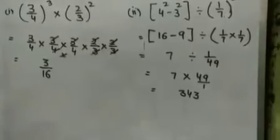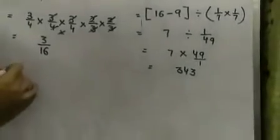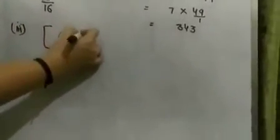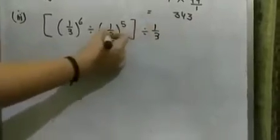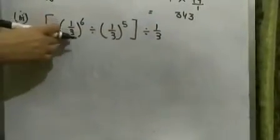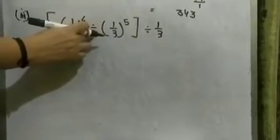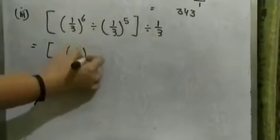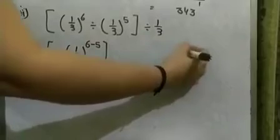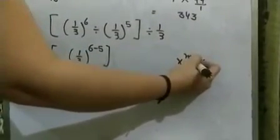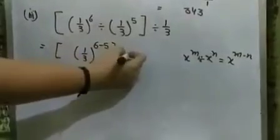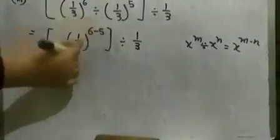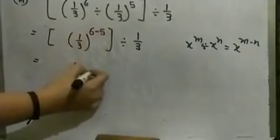Next question: the bracket contains 1 by 3 raised to power 6 divided by 1 by 3 raised to power 5, all divided by 1 by 3. We solve the bracket first. Inside the bracket, the bases are same and division sign is between, so we go for the second law: 1 by 3 raised to power 6 minus 5, which is 1 by 3 raised to power 1, equal to 1 by 3. Then 1 by 3 divided by 1 by 3 gives the answer 1.